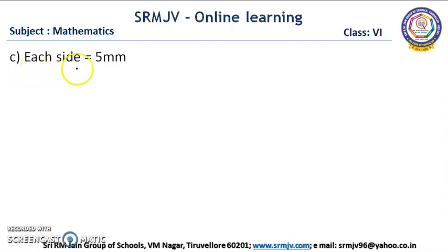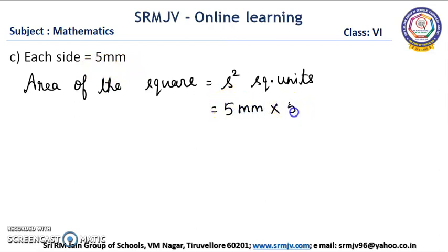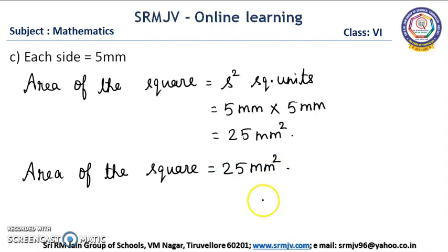The next one: each side of the square is 5 mm. First we write the formula: area of the square is equal to side squared square units, that is side into side. Side is 5 mm into 5 mm. 5 fives are 25, mm into mm is mm square. So the area of the square is 25 mm square. Is it clear children?